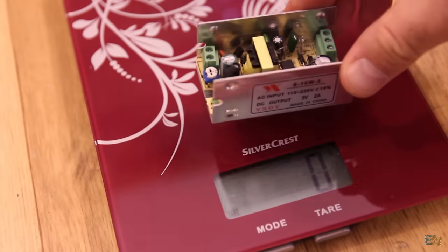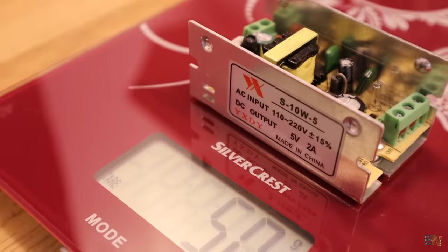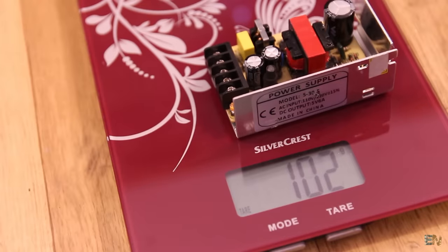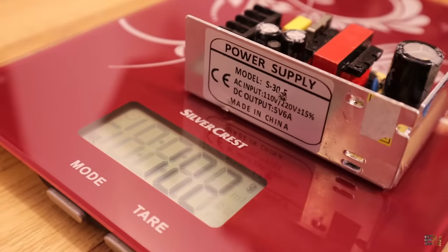As you can see here, this is a 10W switch power supply and it only weighs 50 grams. Now this here is a 30W switch power supply and weighs around 100 grams.